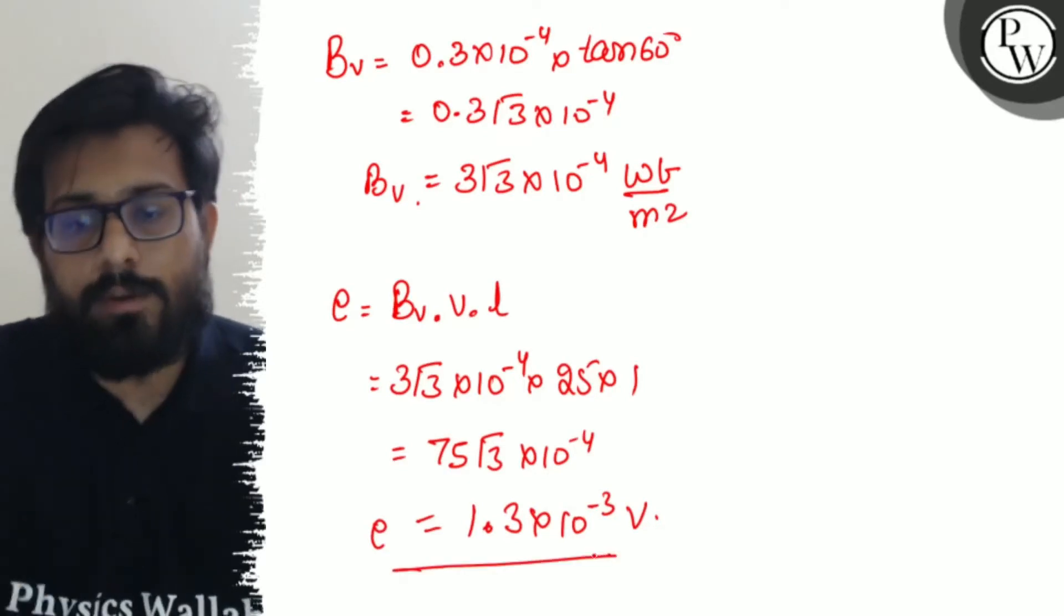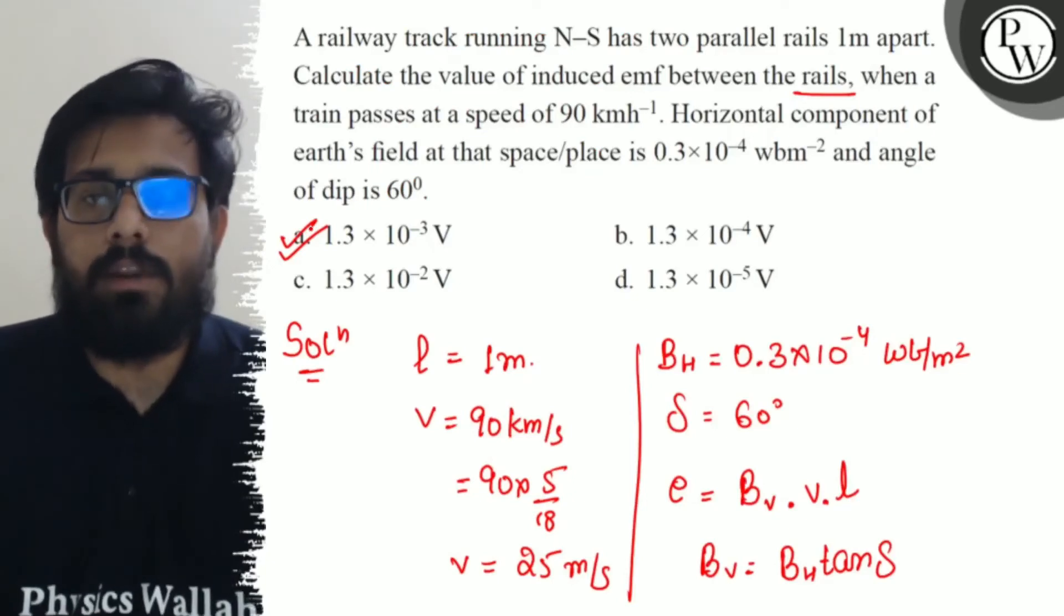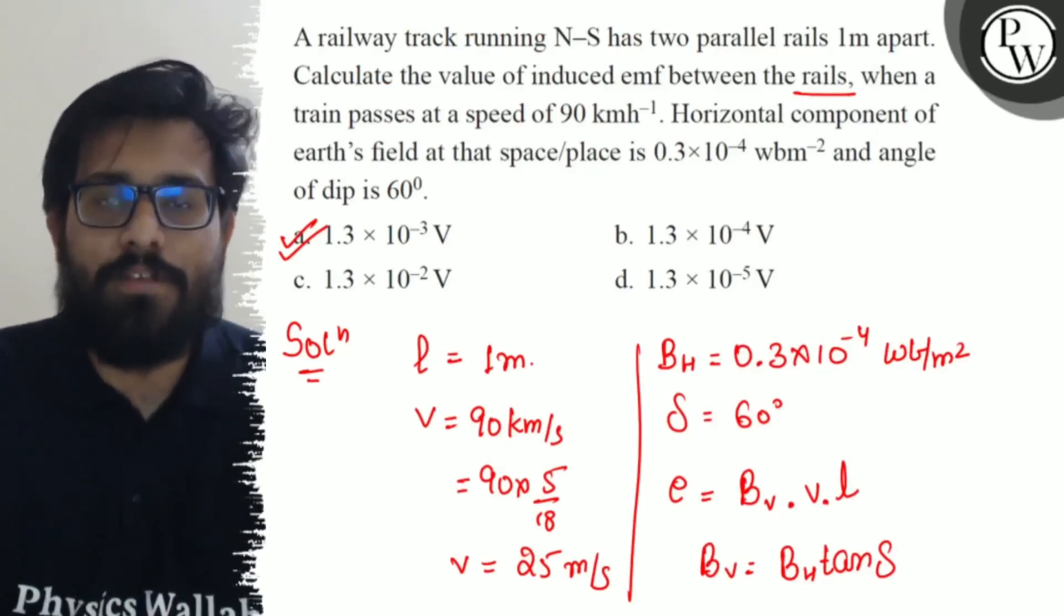Solving this, you will get the value of 1.3×10⁻³ volt. So option A is absolutely correct and I hope you got the concept of this question. All the very best.